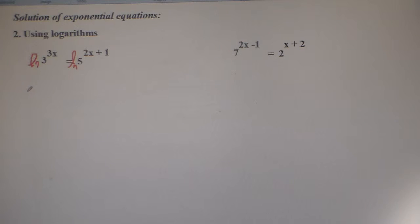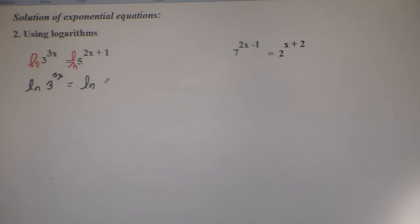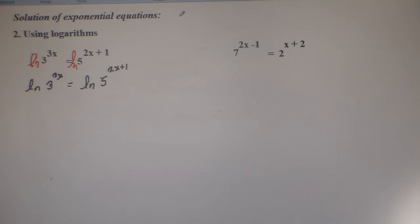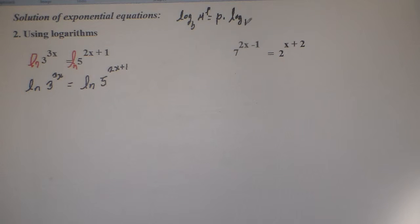Then I have now: natural logarithm of 3 to the power of 3x equals the natural logarithm of 5 to the power of 2x plus 1. Of course, we know the property of logarithms which states that the logarithm in base b of m to the power of p equals p times the logarithm in base b of m. This is the power as a factor property.